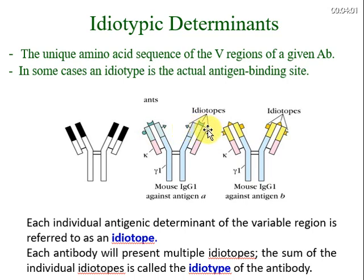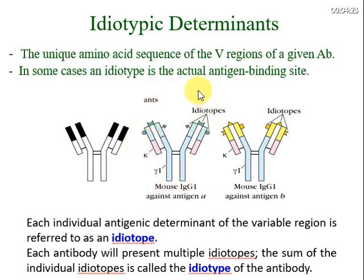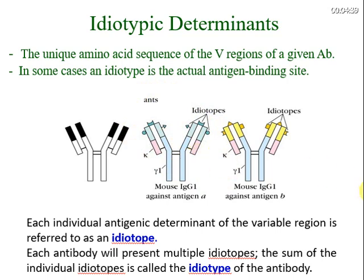Sometimes the idiotypic determinants are actually the antigen binding sites of the antibody molecule. On a single antibody molecule there can be different idiotypic determinants. A single idiotypic determinant is called an idiotope, while all of the idiotopes on an antibody molecule are collectively called the idiotype of that particular antibody. So an idiotope is a single antigenic determinant, and the collection of idiotopes is the idiotype.